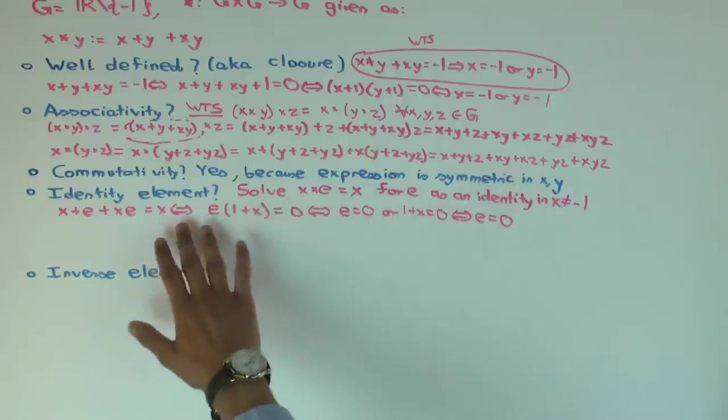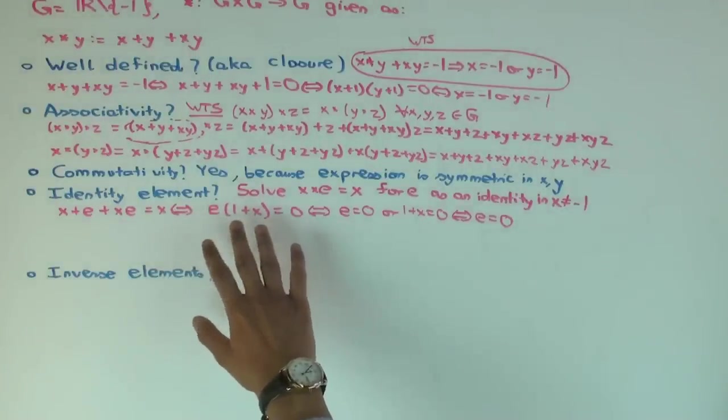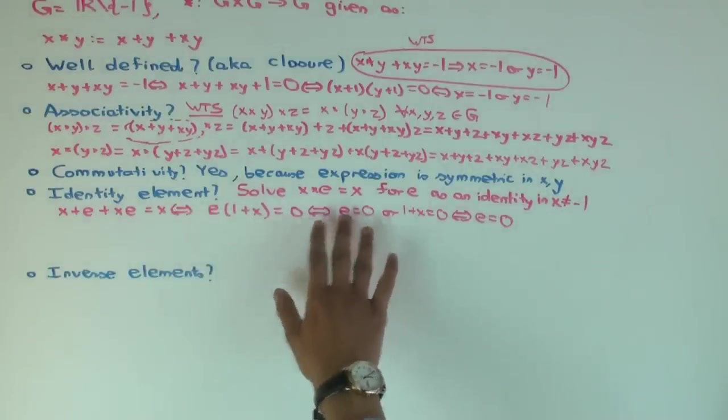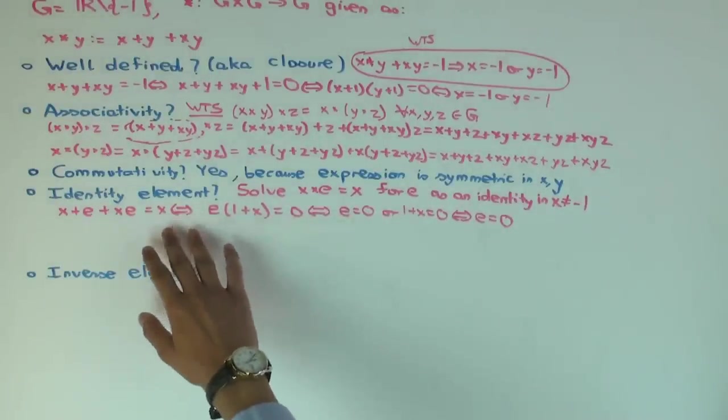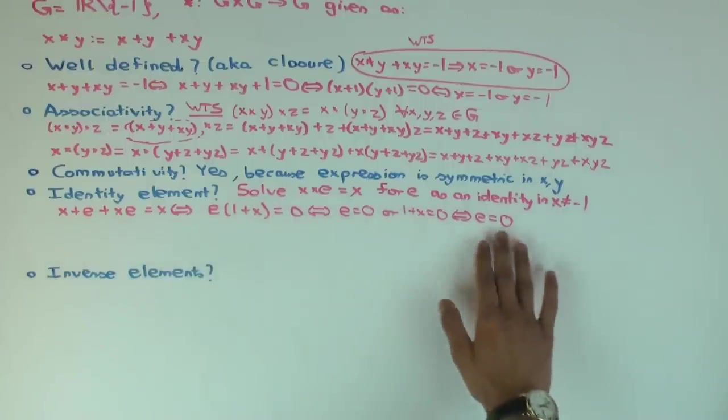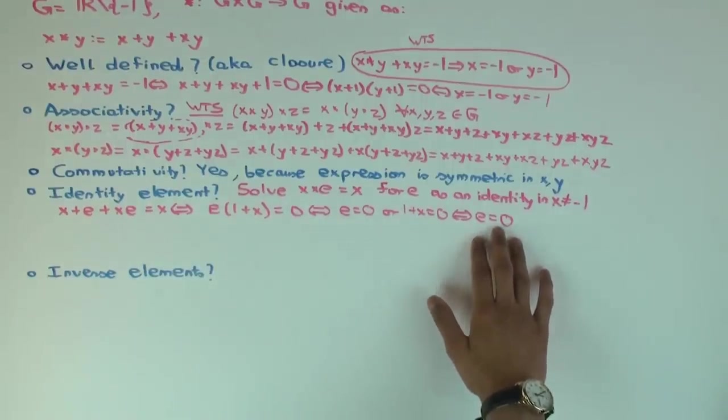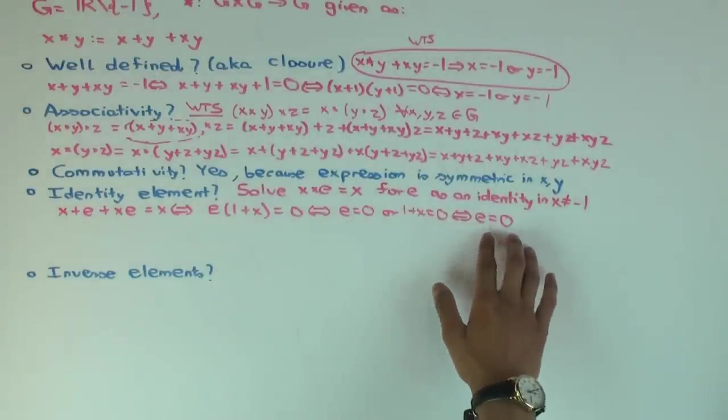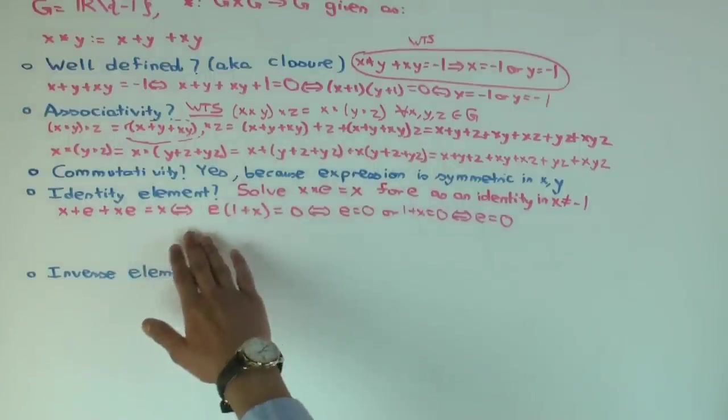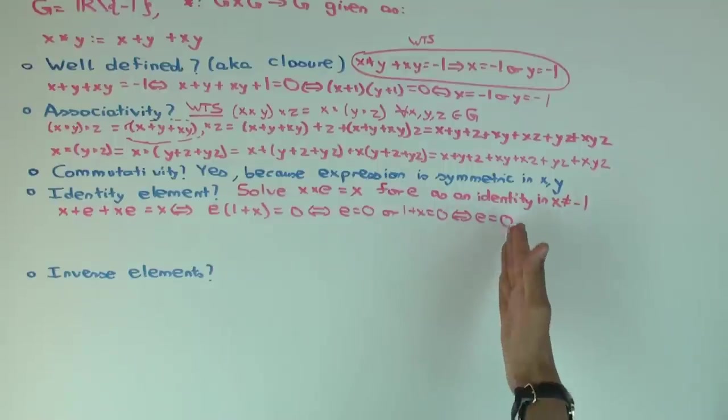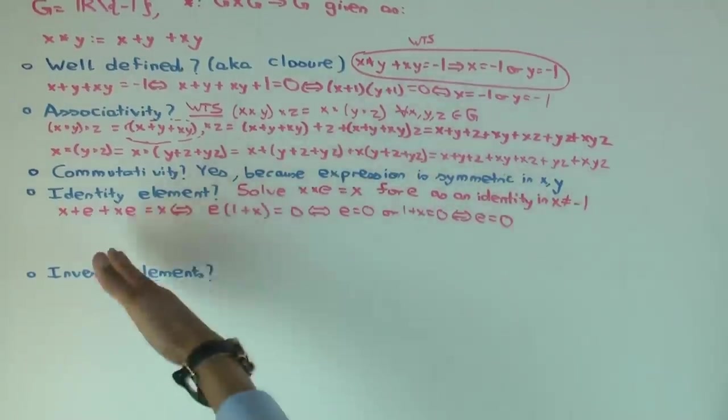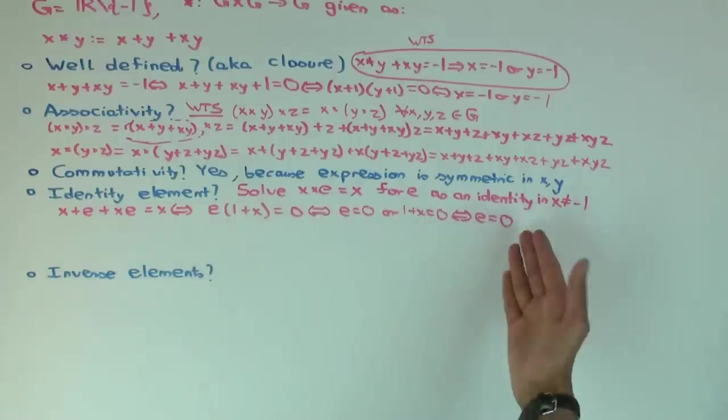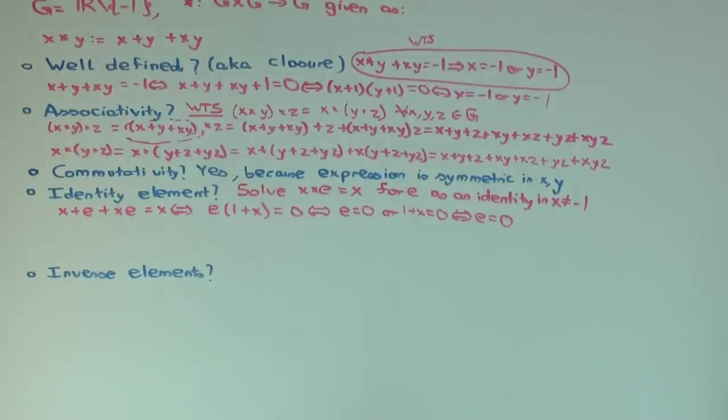Now I just want to explain why I emphasize that we have two-way implications. The reason is that if I just put one-way implication signs, I would get e is 0, but then I would have to check again that that satisfies the condition. Because what I want is a value of e which satisfies this. If I put the implication sign only one direction, then it wouldn't be clear that this satisfies that. But since I put them both directions, it's clear that this already satisfies this. So the identity element is 0.